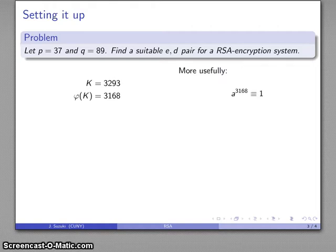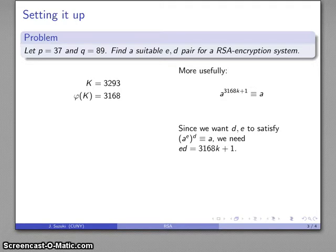More usefully, if a to power 3168 is congruent to 1, I also know that if I raise everything to the k power, I still get 1. And if I multiply by a, I get this relationship: a to power 3168k plus 1 is congruent to a. So now I have a power of a that's going to give me a once again. What I want is d and e to satisfy a to some power giving you a again, so I'm going to make this equal to e times d.